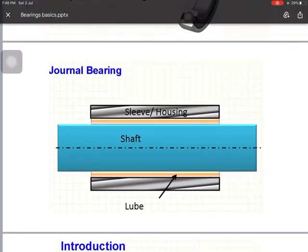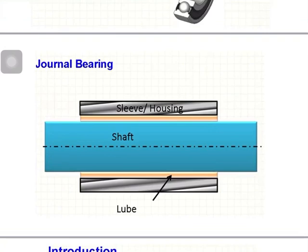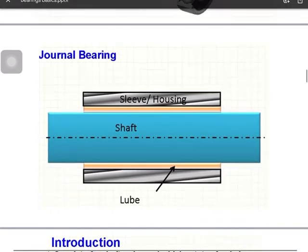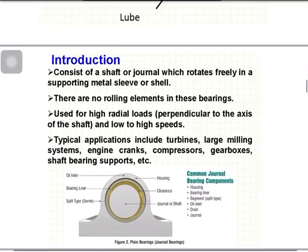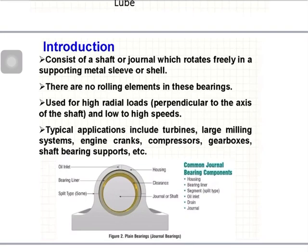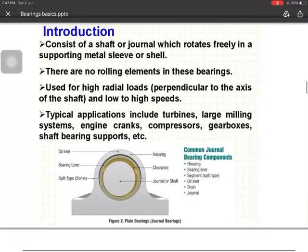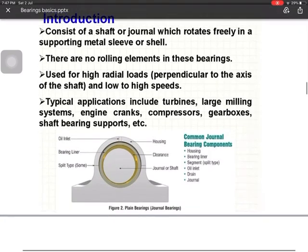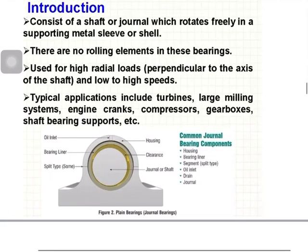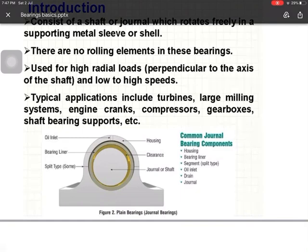In a general bearing, the shaft rotates inside the housing, and the lubricant supports the shaft. General bearings are used to carry heavy radial loads perpendicular to the shaft axis. They consist of a journal rotating freely in a supporting metal shell. There are no rolling elements, so there is sliding friction. General bearings are used in turbines, large milling systems, engine cranks, compressors, gearboxes, and some bearing supports.